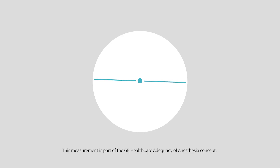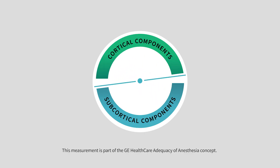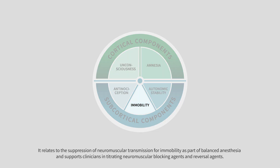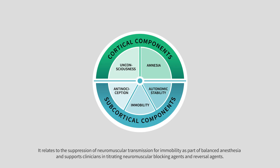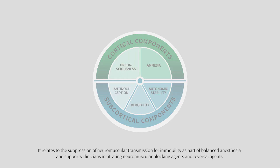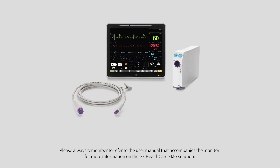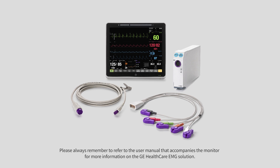This measurement is part of the GE Healthcare Adequacy of Anesthesia concept. It relates to the suppression of neuromuscular transmission for immobility as part of balanced anesthesia and supports clinicians in titrating neuromuscular blocking agents and reversal agents. Please always remember to refer to the user manual that accompanies the monitor for more information on the GE Healthcare EMG solution.